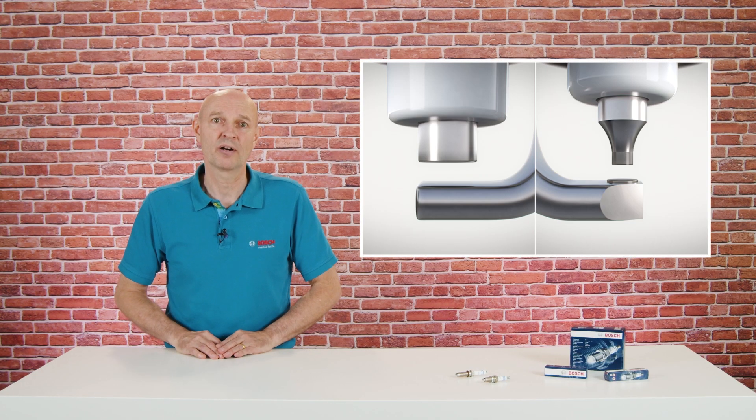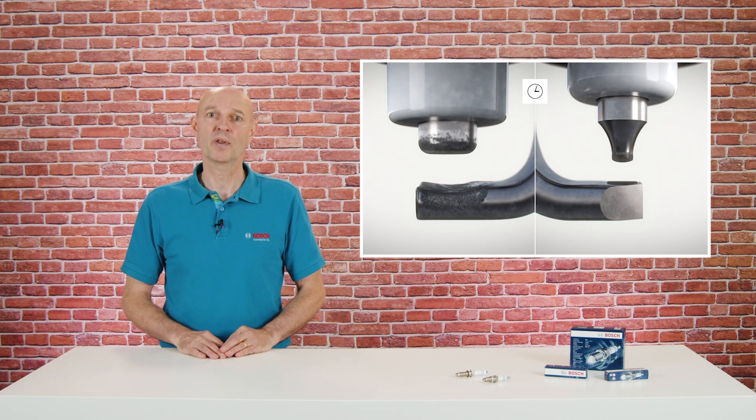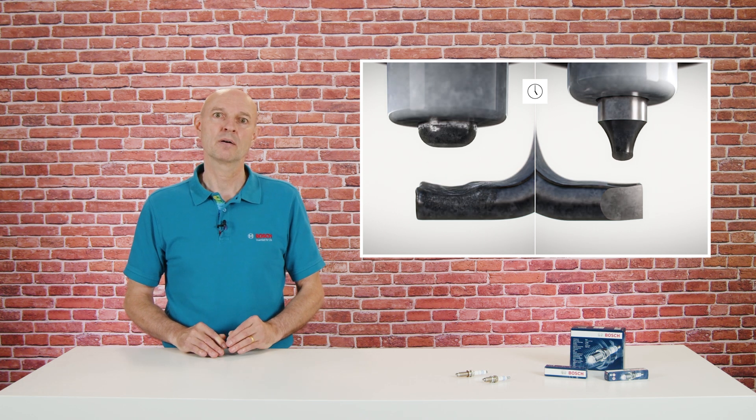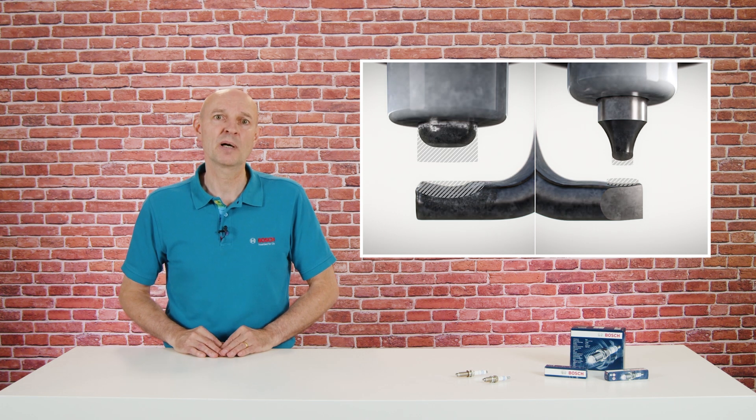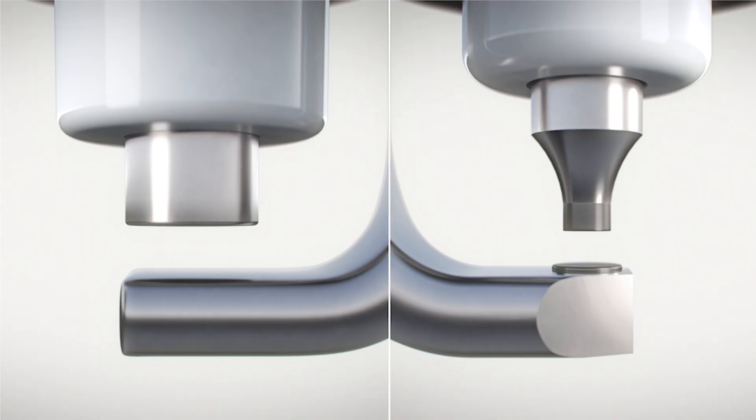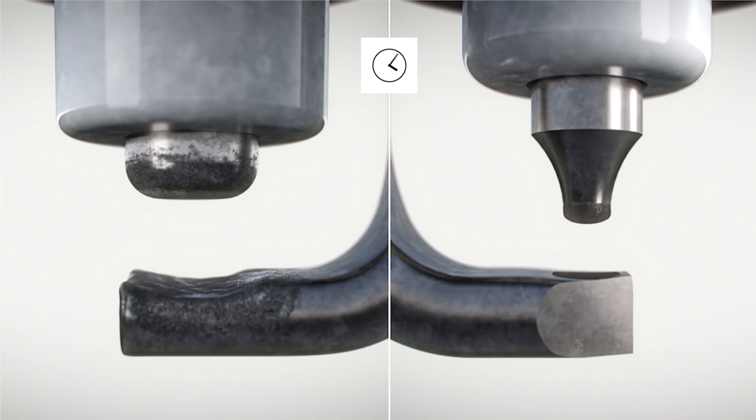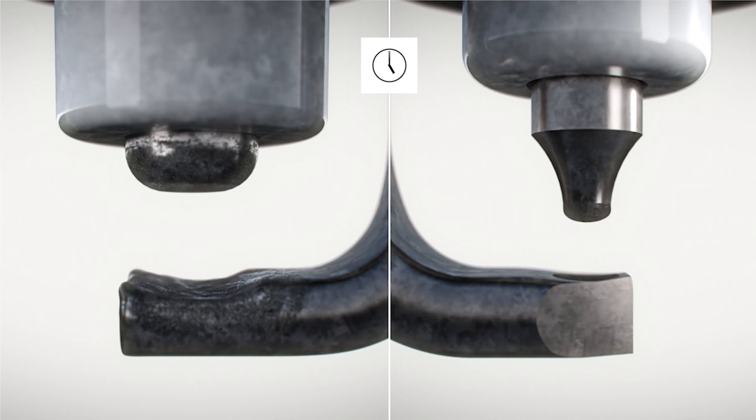Here you can see the comparison of how differently the electrodes wear with and without precious metal. On the left, the nickel spark plug in an engine with port fuel injection, in which of course completely different conditions prevail. On the right, the precious metal spark plug in a turbocharged engine with direct injection.